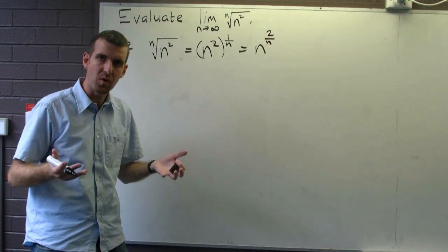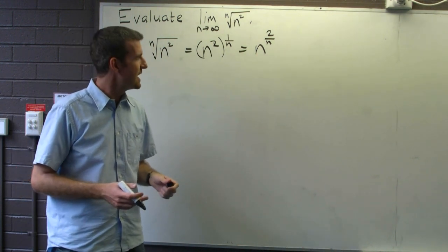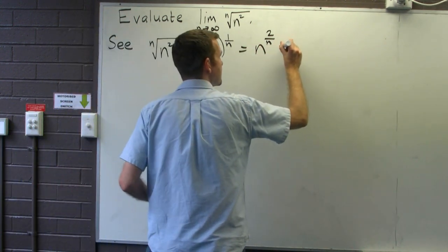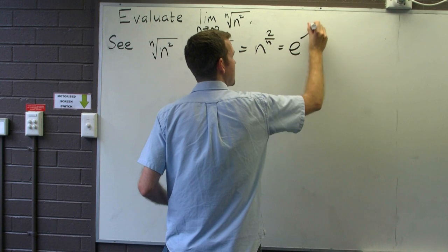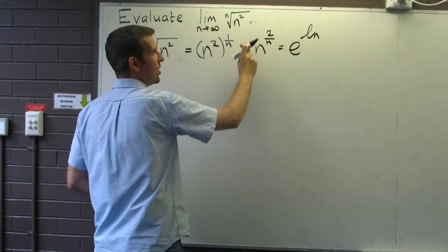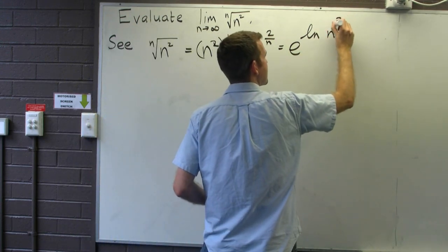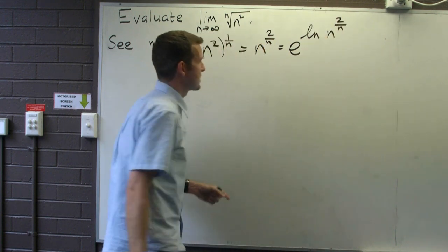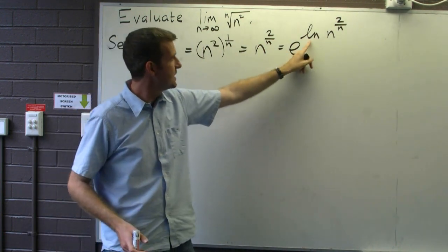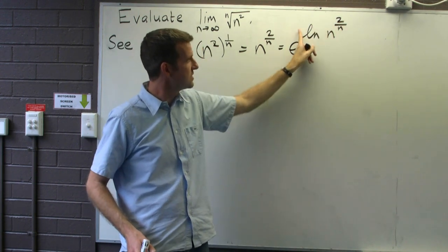So how does that help us? We're not quite finished yet putting this in a format that we can use. Watch what I do now. I'm going to take e to the log of this entire sequence. Now it's starting to look quite complicated, but stay with me. I can now use my log laws to bring this exponent to the front.